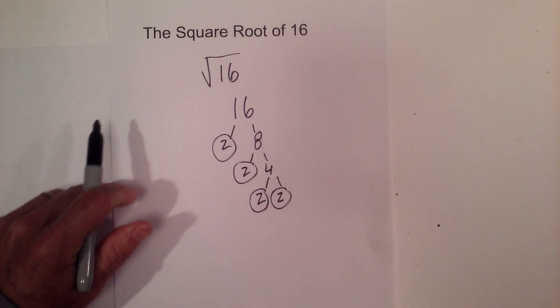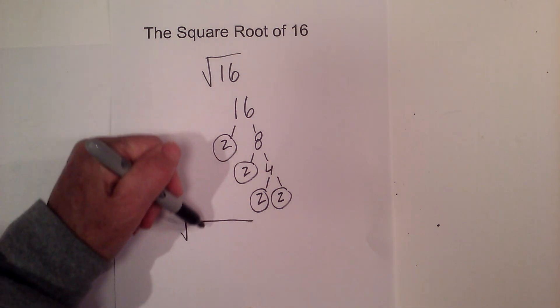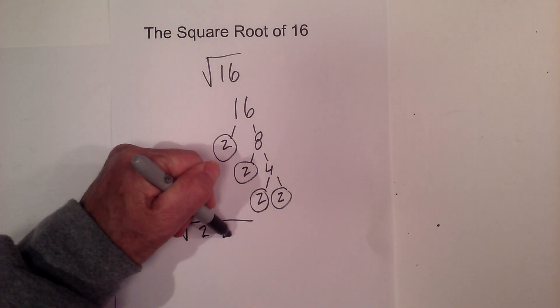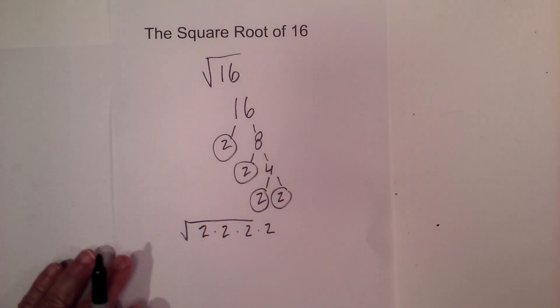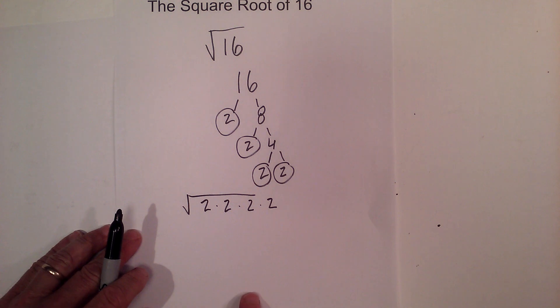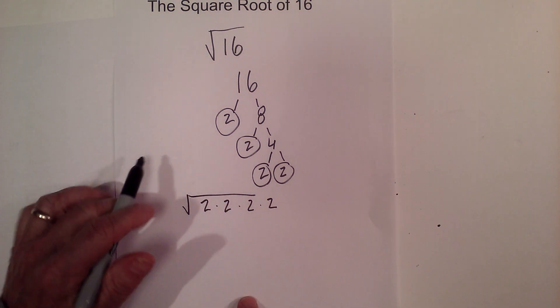So now what I can do is rewrite the square root of 16 with all the prime numbers: 2 times 2 times 2 times 2. Now I can further simplify by pulling out pairs of numbers from under the radical sign.